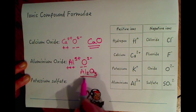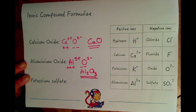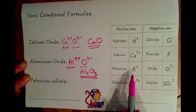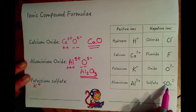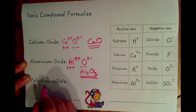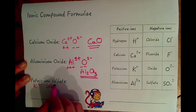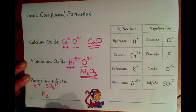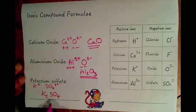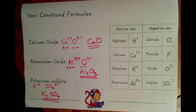And finally potassium sulfate. We've got K+ here and sulfate which is SO42-. We've got one plus at the moment and two minuses, so we need to double up the pluses, so double up the potassium, and we just need one of the sulfate ions, so this would be the formula for potassium sulfate. Very well done if you got all of those correct.